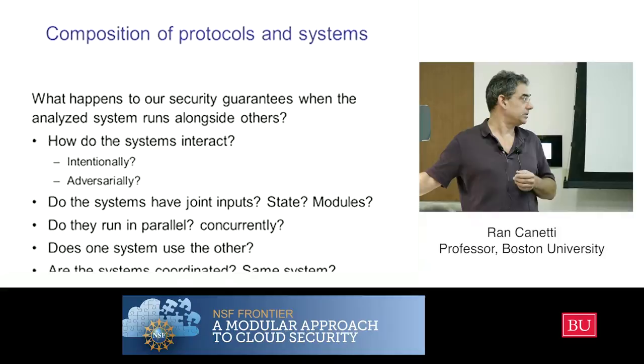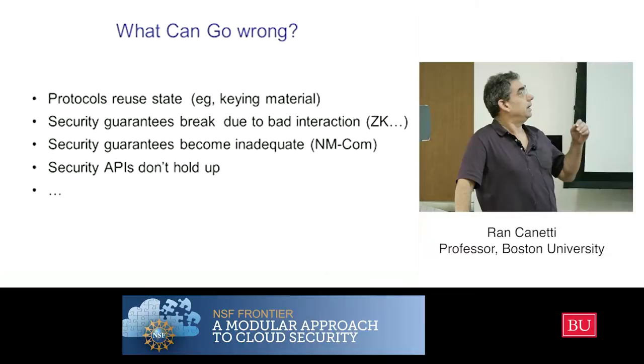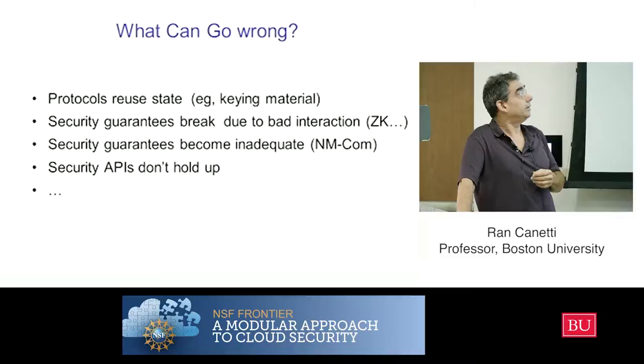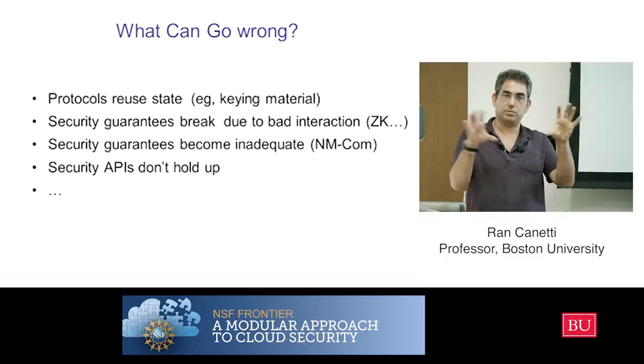All these questions come in, and things can go wrong. If protocols reuse key state or key material, things can go wrong in a bad way. Security can also break when protocols have bad interaction with others — for example, two zero-knowledge protocols run concurrently are no longer zero-knowledge, even though each one individually is, in general.